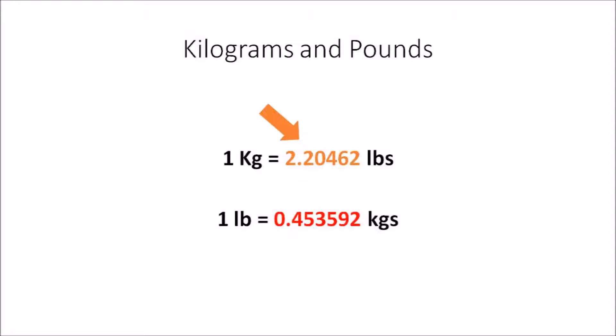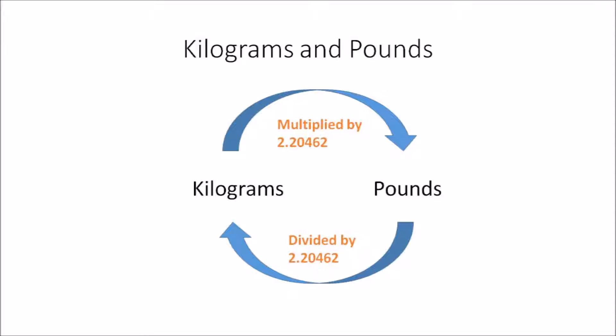The conversion factor I like to use is 2.20462, as shown by the arrow, because 1 kilogram is equal to 2.20462 pounds. In a lot of calculations, 0.453592 is used as the conversion factor, but I prefer 2.20462 because it's easy to remember.